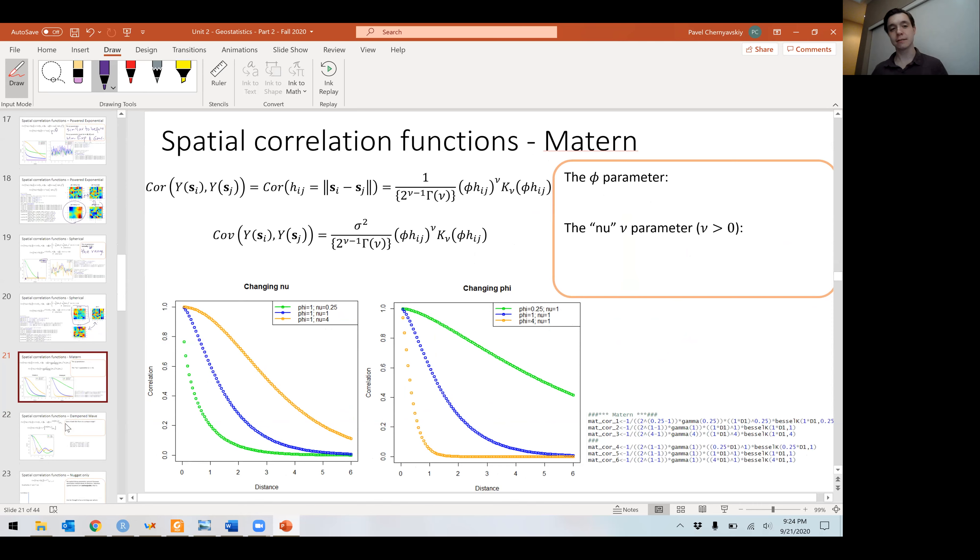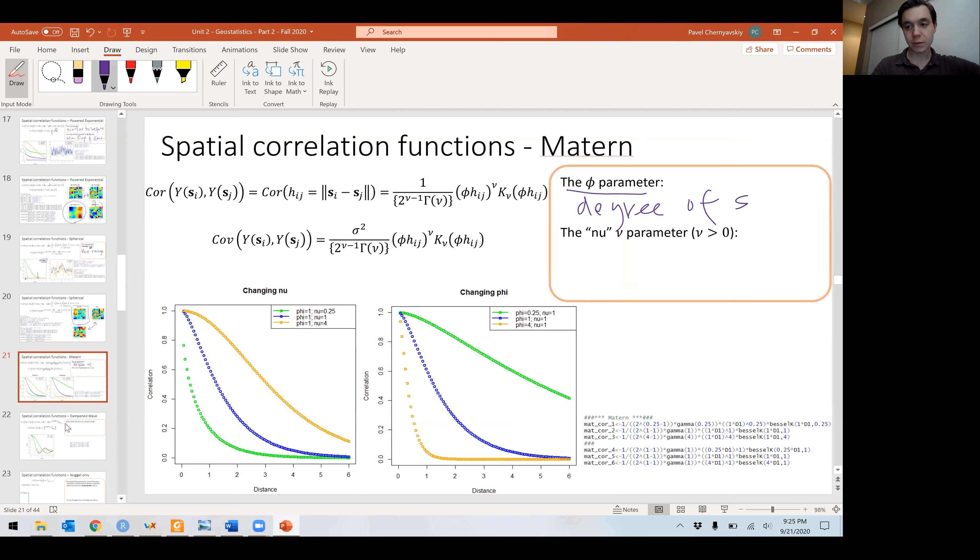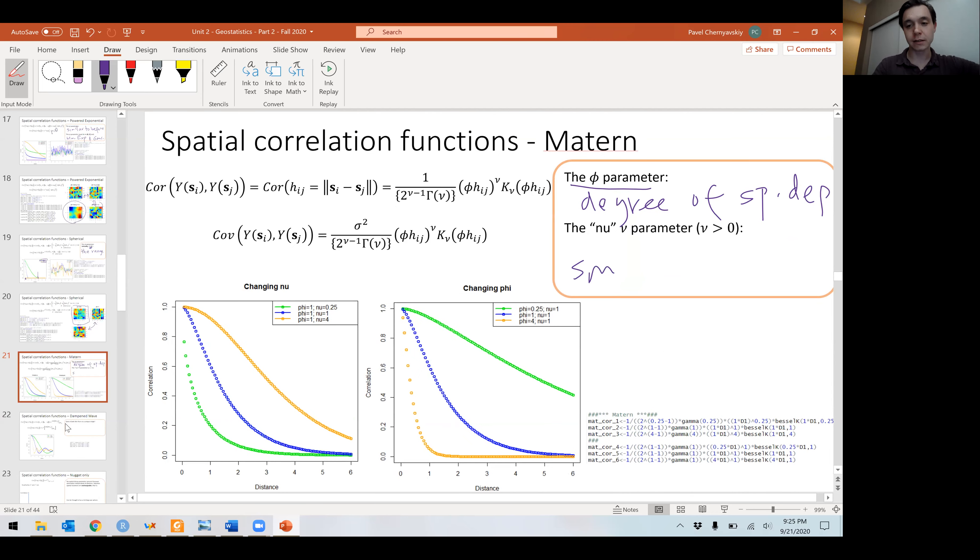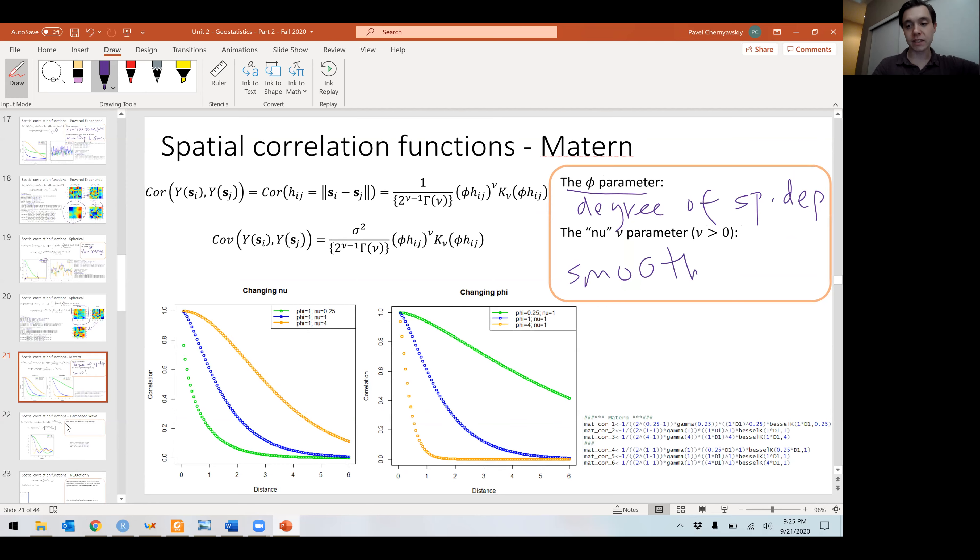Moving on. Matern. So of course, there's not going to be a test where you have to memorize them. Nobody memorizes these spatial correlation functions. But I want you to get a sense of what they look like. Matern is another one that is quite popular. It has two parameters. The phi parameter that controls the degree of spatial dependence. New parameter. Let's write that. Degree of spatial dependence. New parameter is the smoothness parameter. And you can see on the bottom of this slide how they affect what that line looks like. Same concept. If you have strong spatial correlation, you will have more information to estimate these things. Most often, we fix nu at a value.